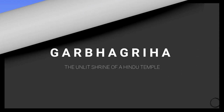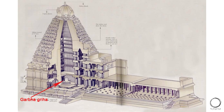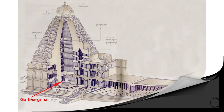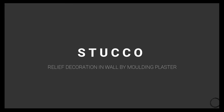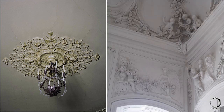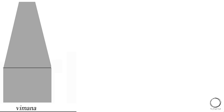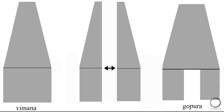Garbhagriha means the enlightened shrine of a Hindu temple — the centermost part of the temple where we are not allowed in most temples. Moving on, stuco means relief decoration in a wall by molding plaster; the decoration you see in ancient buildings and churches is called stuco. The next term is gopuram, a gateway tower of a South Indian temple — when the vimana has a gateway, it is called a gopuram.